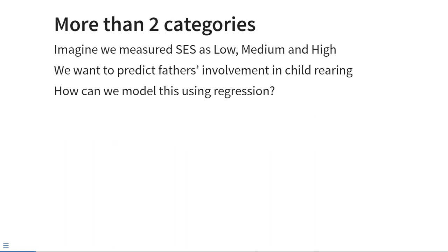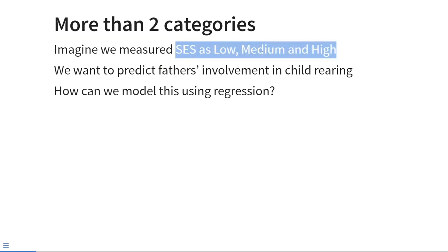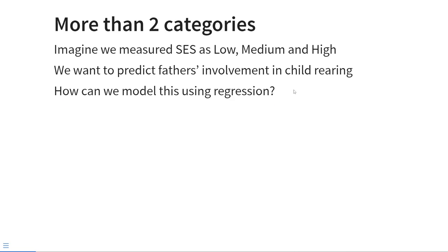Let's look at an example of a categorical variable with more than two categories. Imagine that we measured socio-economic status (SES) as low, medium, or high. We want to predict father's involvement in child rearing, measured in hours per week of time spent with a child. So we have a continuous outcome variable — father's involvement — and a three-category ordinal predictor variable. Today we examine how to model this using regression, or the general linear model.